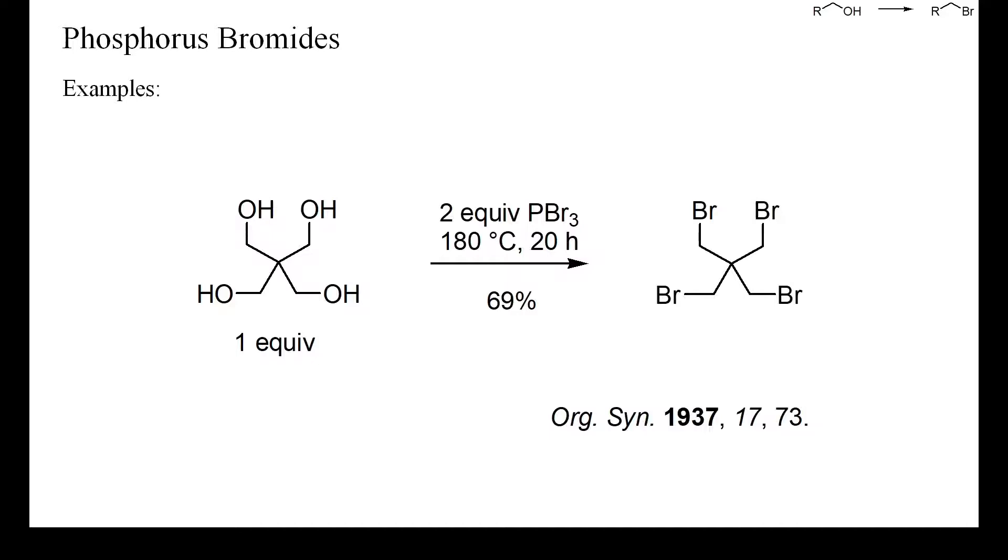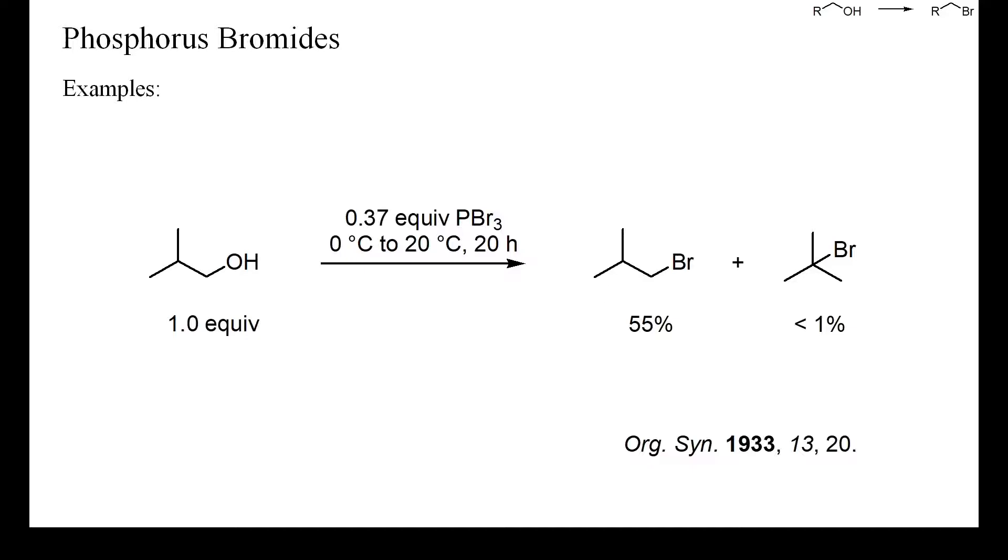In this example, again neither base nor solvent were required, but despite the low reaction temperature, isomerization to the tert-butyl cation occurred to a small extent.